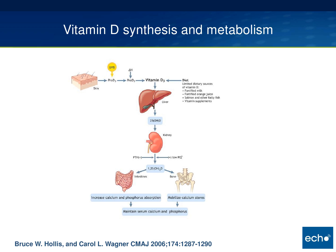There are also dietary sources of vitamin D3, which come fortified in milk, in orange juice, and naturally present in salmon and some oily fatty fish. Both vitamin D2 and D3 come from dietary sources as well as supplements.